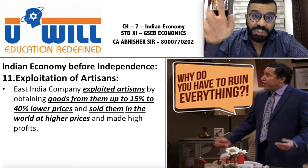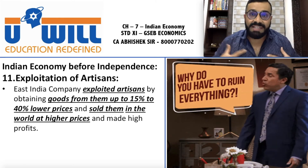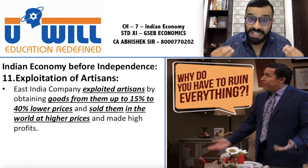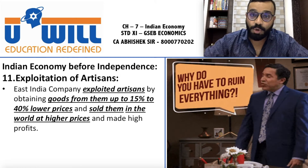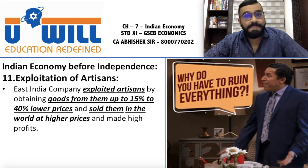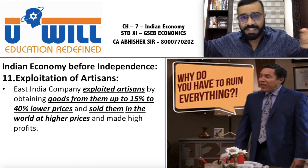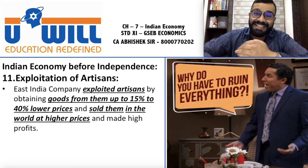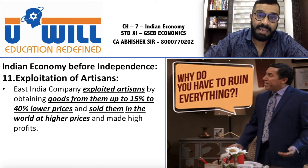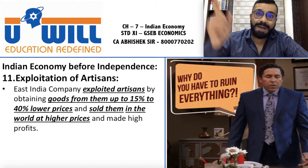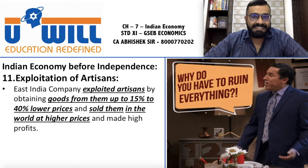Artisans ko bola — tujhse samaan khareedoonga ek dam saste mein, aur isi samaan ko duniya mein bechunga at a very high price. Artisans majboor the kyunki government kiski thi? Britishers ki. Toh woh unke samne kuch action le hi nahi paye. Aur dekhte hi dekhte Britishers ne itna zyada profit kama liya, itni wealth bana li ki aaj ki tarikh mein bhi dekho — UK kahan para hai aur India kahan reh gaya.